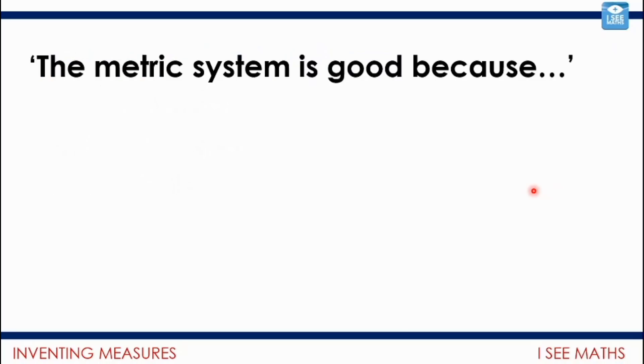Now, this brings us on to almost where we started in this little sequence. The metric system is good because... So the metric system is our system that we have for length with millimeters and centimeters and meters. The metric system is good because... What's good about our system then? What has this made you reflect on? Pause the video. What's good about our metric system?